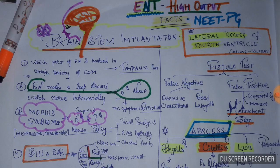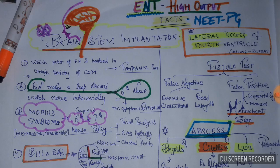Which part of the facial nerve is involved in the unsafe variety of chronic otitis media? It is the tympanic part of the facial nerve. Intracranially, the facial nerve makes a loop around the sixth nerve, so if the facial nerve is involved intracranially, the most common symptom will be diplopia due to lateral rectus palsy. Extracranially, the facial nerve is associated with the eighth nerve.